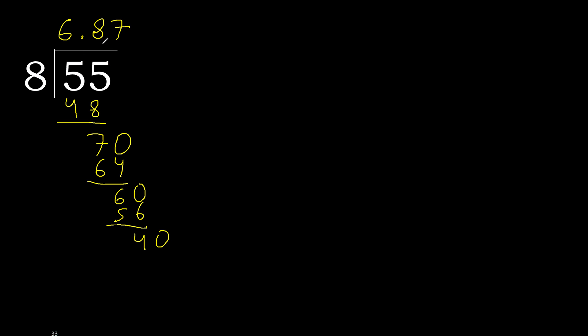8 multiplied by 5 is 40, which is not greater. Subtract 0. 0, therefore finished.